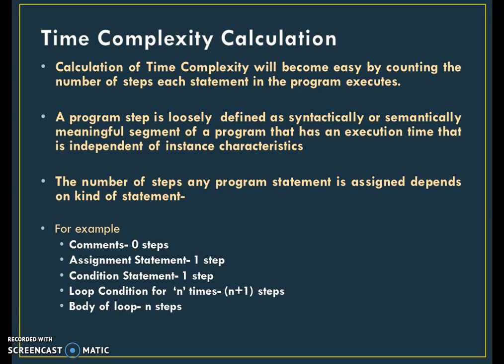Note that all statements in the program may not execute every time. Hence, first we need to identify executable statements in a program. After identifying executable statements, count the number of steps for each statement. For example, comments are not executed at all. An assignment statement takes only one step to assign a value. If it is a condition statement, it is executed n plus 1 times, where n steps are executed for the true condition and the last one is executed for the false condition.